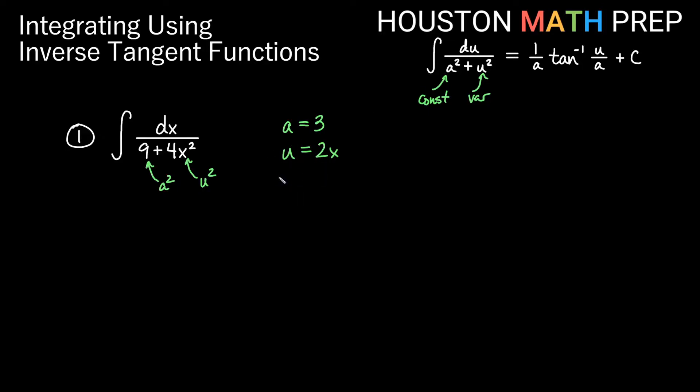So now we need du. Well, based on u equals 2x, what is du? The derivative of this would be 2. So du is 2 dx. We don't have exactly 2 dx on the top here, we actually just have dx. So how could I turn this statement into exactly something for dx? I could divide both sides by 2. That would say then that 1 half du is equal to dx. And now I know exactly what dx is going to be, dx is going to be 1 half du.